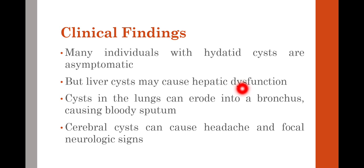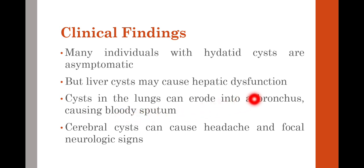For example, if the cyst is in the liver, it may cause hepatic dysfunction and disrupt normal liver function. If the cyst is in the lungs, it will disrupt pulmonary function and can also erode into a bronchus, causing bloody sputum. If the cyst is in the brain, a cerebral cyst can cause headache and focal neurological signs and symptoms. The signs and symptoms therefore depend on the site of the cyst.